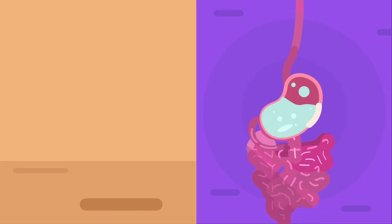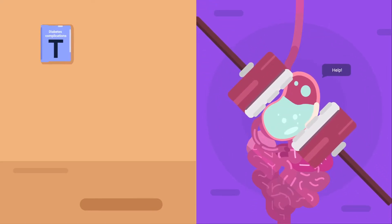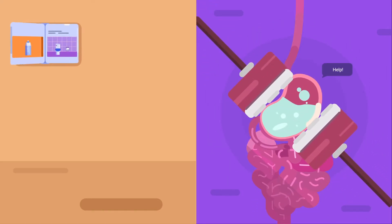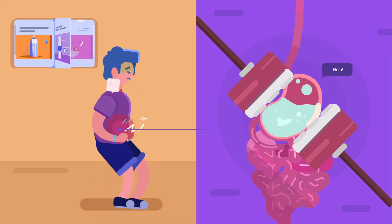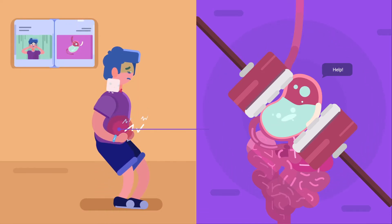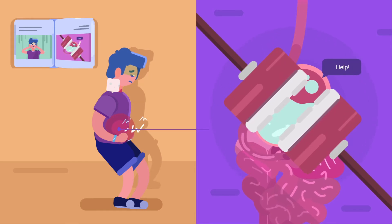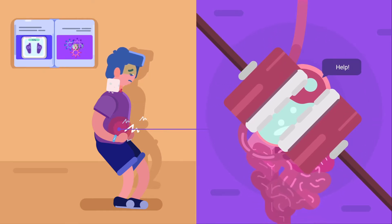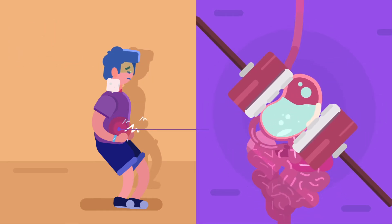Changes in bowel habits, diarrhea or constipation, may also occur, or losing the ability to perceive the symptoms of hypoglycemia — palpitations, sweating, trembling, dizziness, altered mental status, among others.